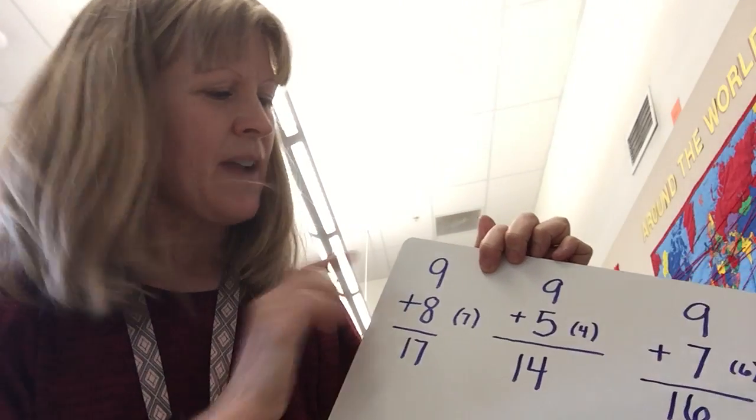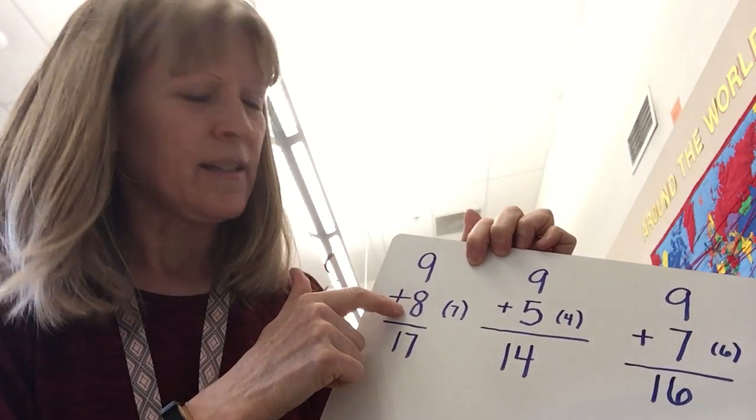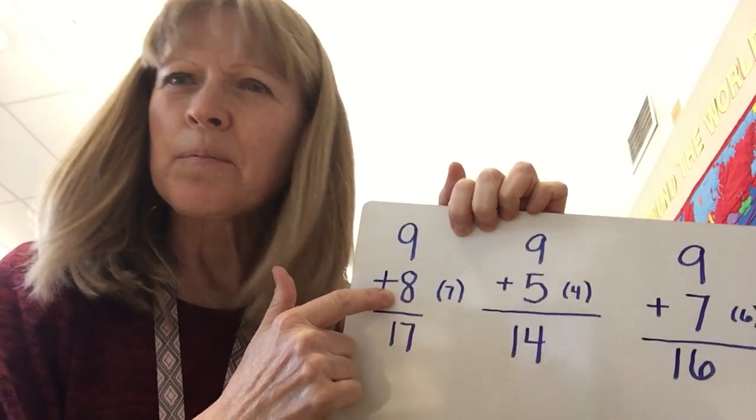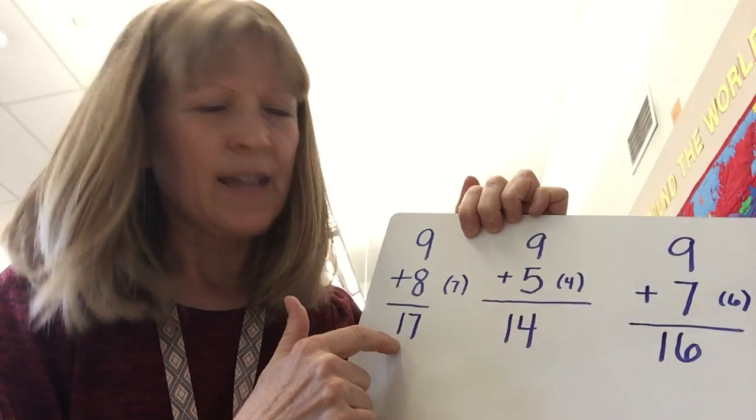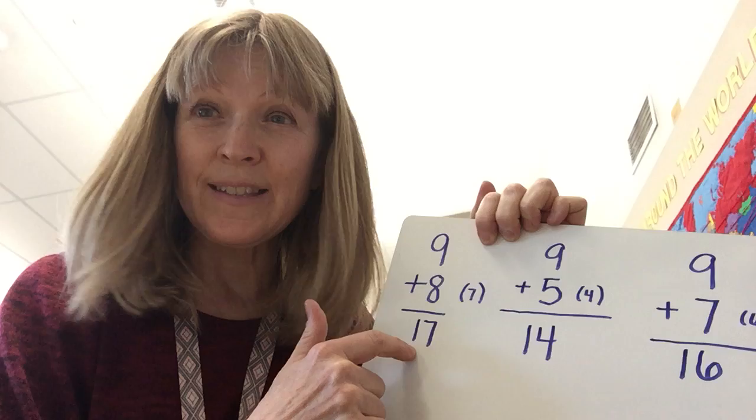So here's my trick. You look at the number that you're adding to the nine. Don't look at the nine. Look at the eight. And you think, what's one less than eight? Oh yeah, seven. And then you say teen. The answer is 17. That's easy, huh?